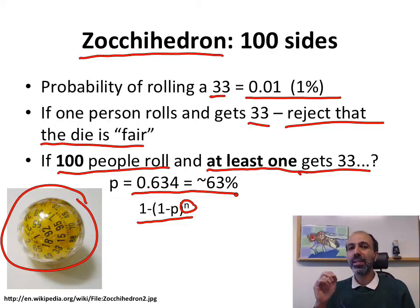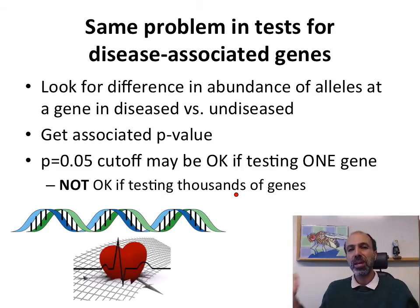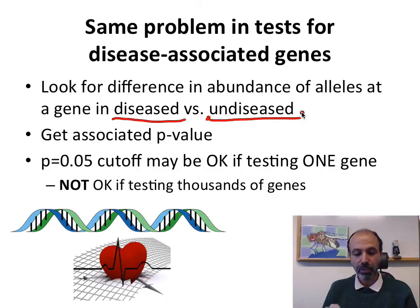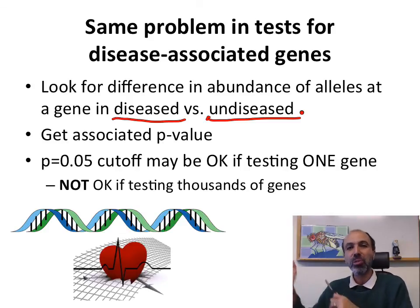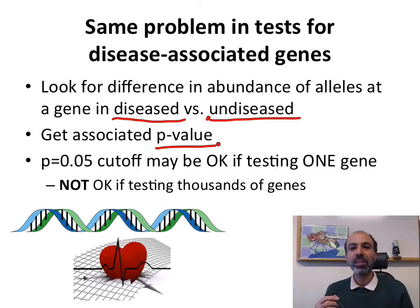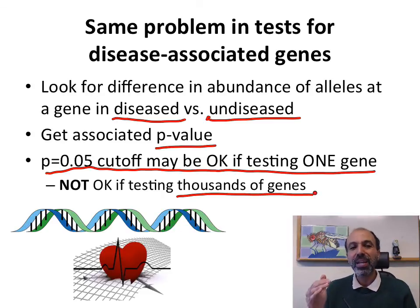This is illustrative of a problem that happens with a lot of genetic testing. When people try to look to see if alleles at a gene are associated with a disease, they often don't test one gene but many, many genes. They look for a difference in abundance of alleles in the pool of people who have the disease versus those who don't. There's some probability just by chance that you'd have a big difference — for example, diseased people tend to have a T nucleotide at a particular site, whereas undiseased people tend to have a G nucleotide at that same site. A p-value of 0.05 may be okay if you're testing alleles at one gene, but if you're testing thousands of genes, the odds that at least some of them will show such a difference by chance is very high — the same as rolling that die many times.